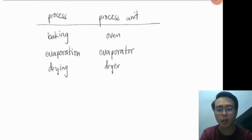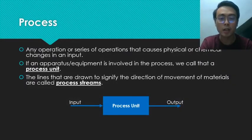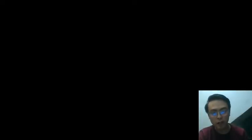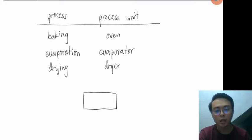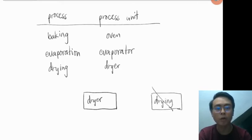This distinction is important because when making flowcharts, we draw boxes and write the name of the process unit inside the box — never the process itself. For example, if our process is drying and we construct a flowchart, the box should contain the word 'dryer', not 'drying'. Writing the process name inside the box is incorrect; we always use the process unit name.